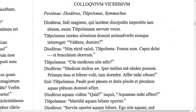Tlepolemus says, 'Cur medicum non adis?' — Why do you not go to the doctor? Diodorus replies, 'Medicus stultus est' — the doctor is stupid. 'Ipse melius me sanare possum' — I myself am able to cure myself better. 'Primum esse et bibere volo' — first I want to eat and drink. Notice the long mark on 'esse' — not 'esse' meaning to be, but 'esse' meaning to eat. 'Affer mihi cibum' — bring me food. Tlepolemus goes out.